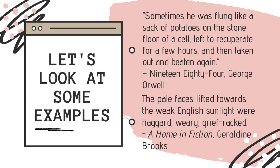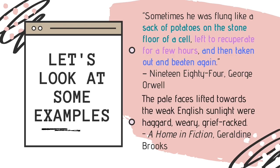When you look at this sentence, you can see there are three parts to the description of Winston's torture. The first section is 'sack of potatoes on the stone floor of the cell.' The second part is 'left to recuperate for a few hours.' And the third part is 'and then taken out and beaten again.' So the sentence breaks down into three things — three steps in creating the imagery of what's happening to Winston.